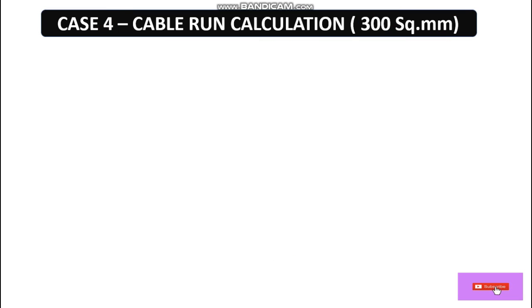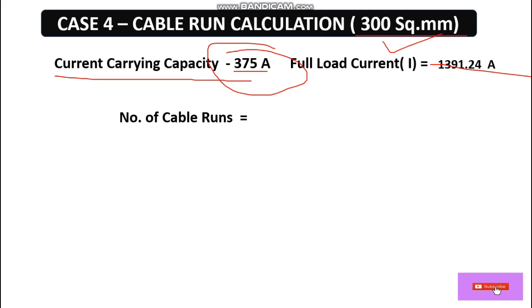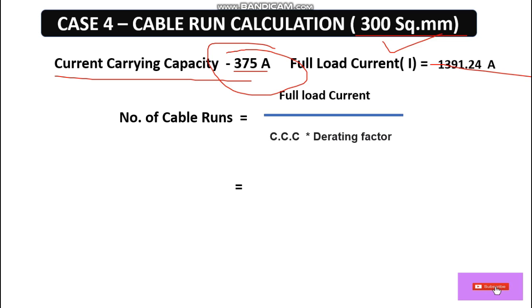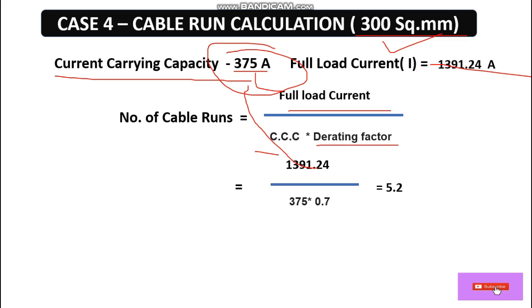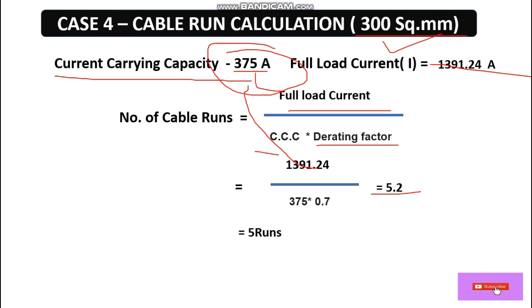Case 4: Let's decrease to 300 square mm. Looking at the catalog, the current carrying capacity of 300 square mm cable is 375 ampere. Full load current is 1391.24 ampere. Number of cable runs = 1391.24 / (375 × derating factor) = 5.2 runs, so 5 runs. For both 400 square mm and 300 square mm cables, 5 runs are required.